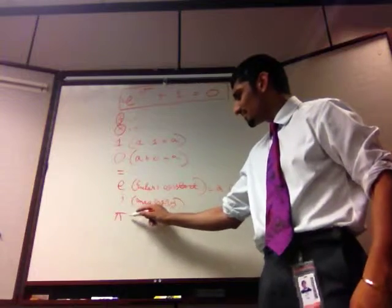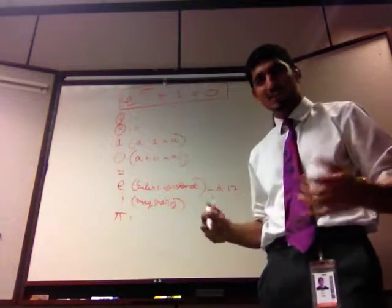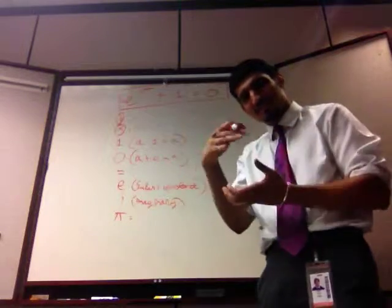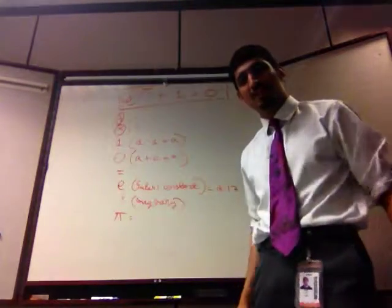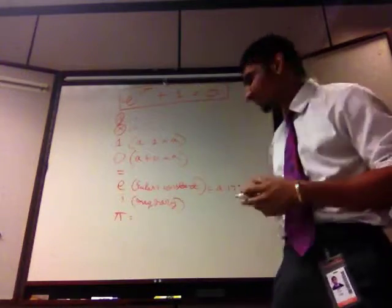These are very transcendental constants. They're non-recurring, non-repeating decimals. It's almost amazing that you put them together in some combination of mathematical operations, and you get an integer. But anyways, let's see why this is true.